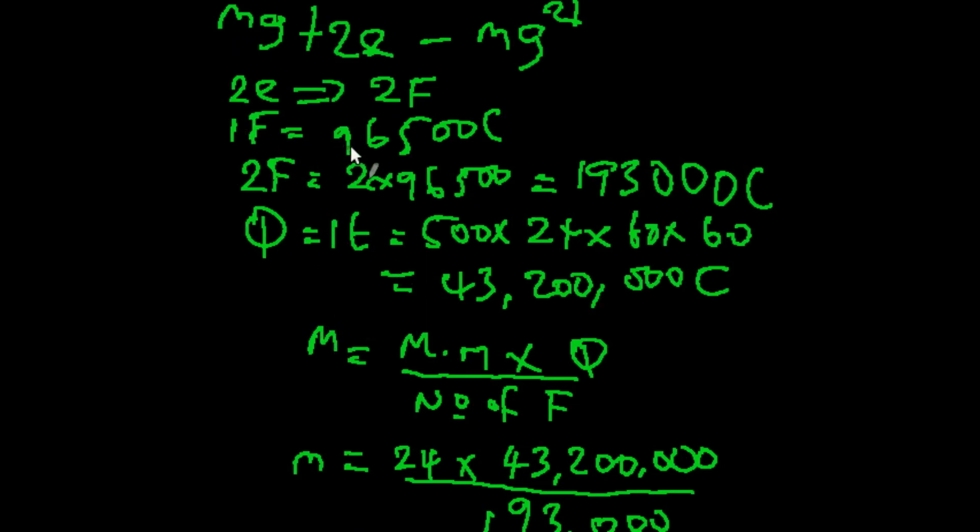And so two electrons is equivalent to two faradays. One faraday is equivalent to 96500 coulombs. So two faradays will give us two multiplied by 96500. That will give us this value you see here. Then we also calculate the quantity of electricity during that time. So that is equivalent to the current multiplied by time. So our current is 500 amperes multiplied by 24 times 60 times 60. That is converting 24 hours to seconds.